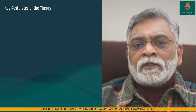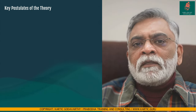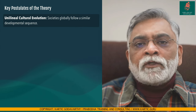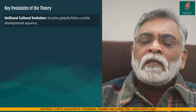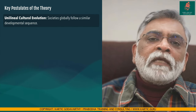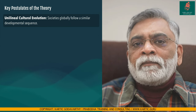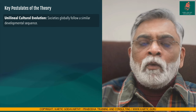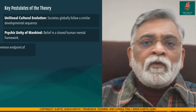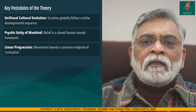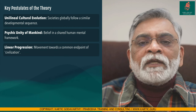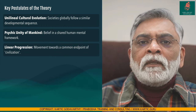The foundation of classical evolutionism rests on several key postulates. The most significant is the concept of unilineal cultural evolution, which proposed that all societies, irrespective of their geographical location or background, follow the same path or sequence of development. This was made possible by the belief in the psychic unity of mankind. It viewed human development as a linear process, with all societies inevitably moving towards a common endpoint of civilization, akin to that of Western Europe and America at the time.